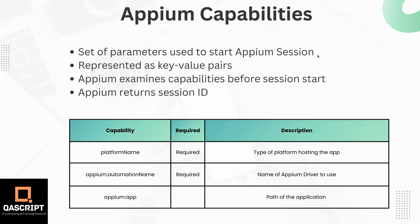Moving on to our next topic on mobile automation with Appium, we are going to discuss Appium capabilities. These capabilities is basically the name given to the set of parameters which is used to start an Appium session. The information which we provide is used to describe what sort of capabilities you need in your session.